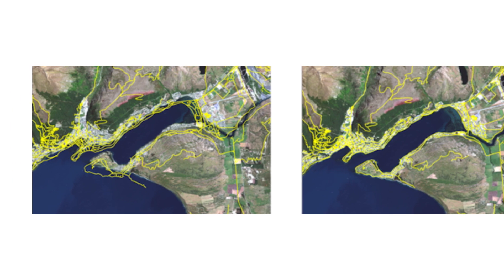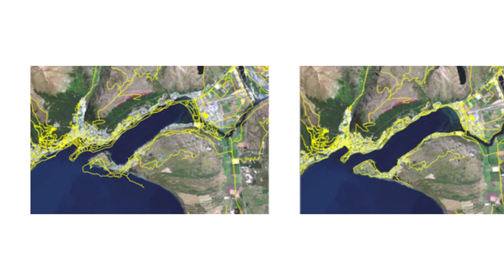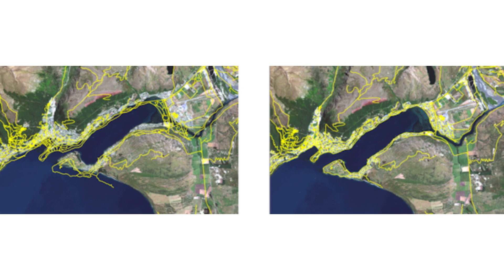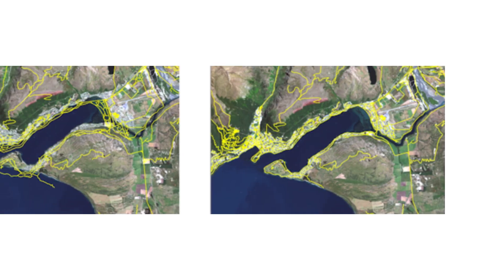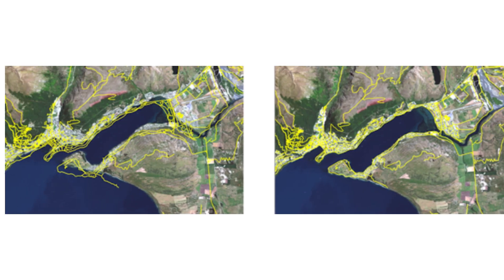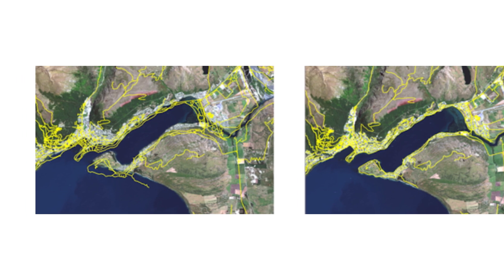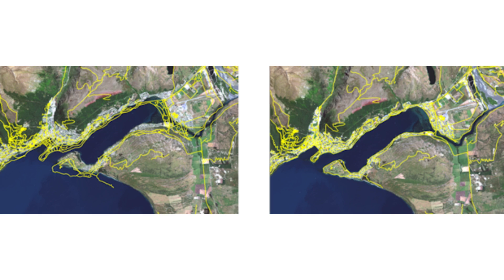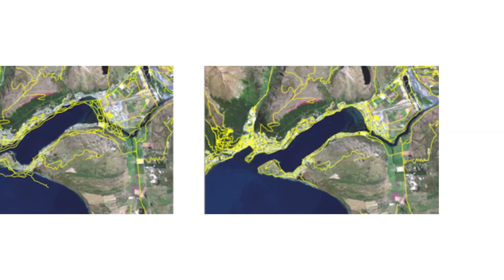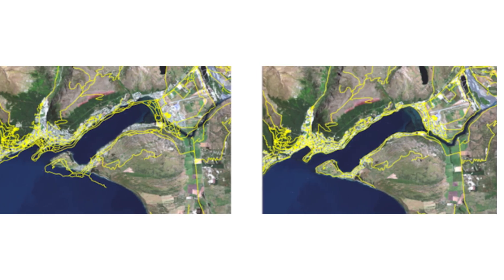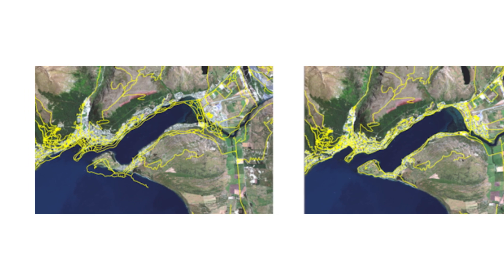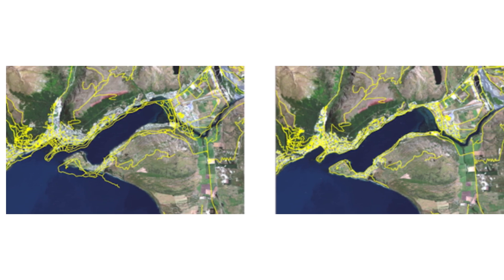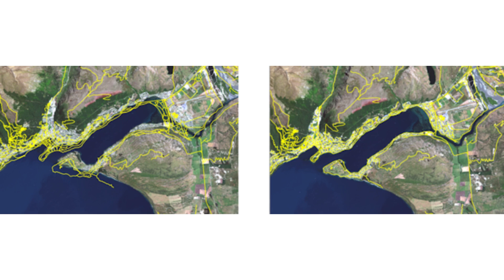Orthorectification can accurately project every pixel from the raw image to its correct place in a mathematically defined grid coordinate system. The graphic on the left depicts a raw WorldView-2 satellite image. The graphic on the right shows the same scene corrected using orthorectification. This process corrects the image pixel by pixel for topographic distortion. The result is that every pixel appears to be viewed from directly above — that is, the image is a strict orthographic projection.